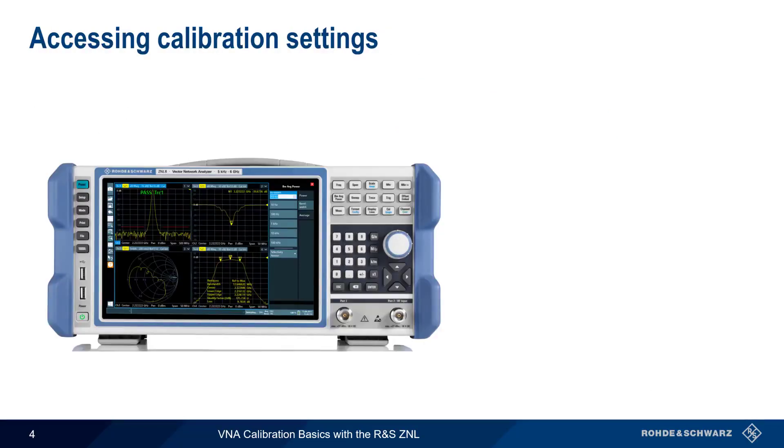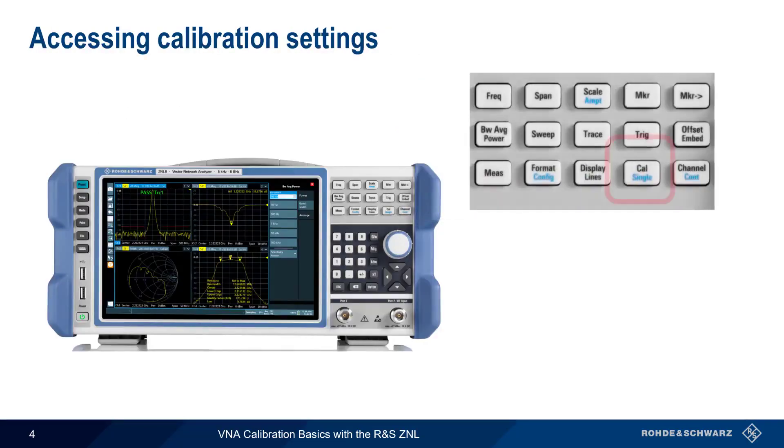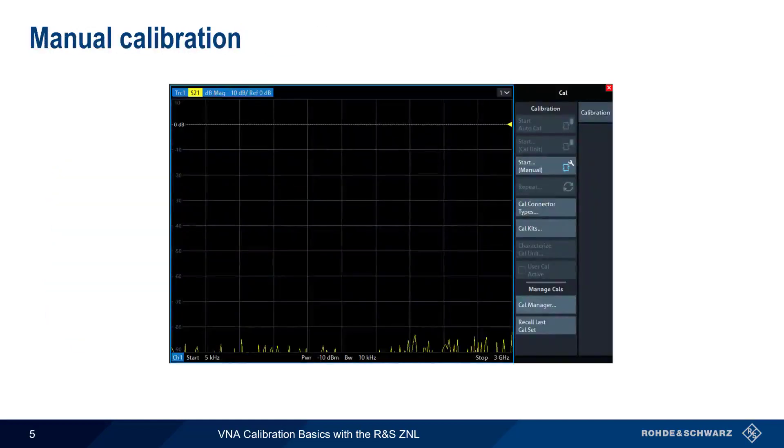To access the calibration settings on the ZNL, use the Cal hard key on the front of the instrument. We'll start by performing some manual calibrations. Choose Start Manual to enter the calibration setting dialog.